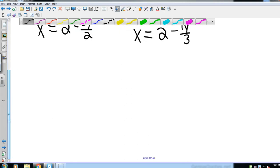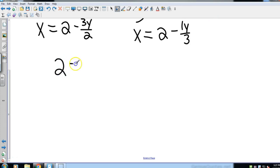So now I've got two values of x. So I set them equal to each other: 2 minus 3y over 2 equals 2 minus 1y over 3. Now what's going to happen with these 2's? Because I have the exact same thing on both sides, we did this a long time ago, so we're thinking back. If I have the same thing on both sides, I can actually just cancel them.